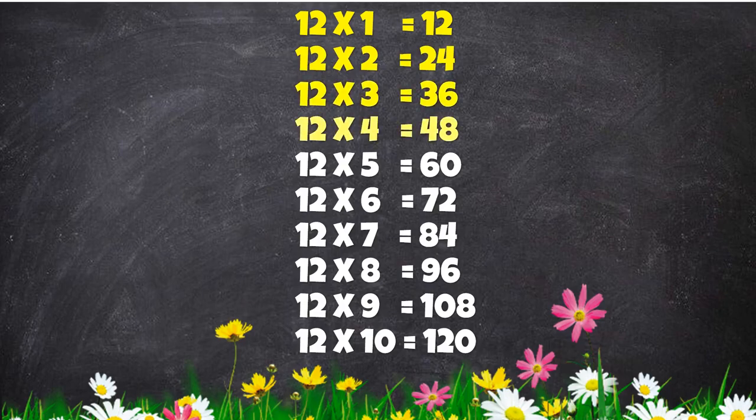Twelve fours are forty-eight. Twelve fives are sixty. Twelve sixes are seventy-two.